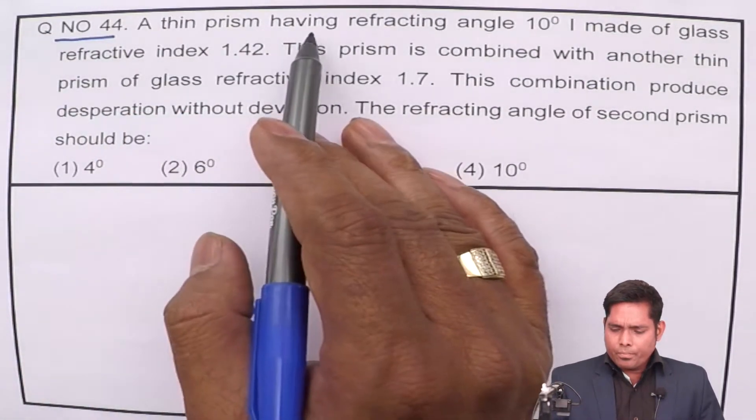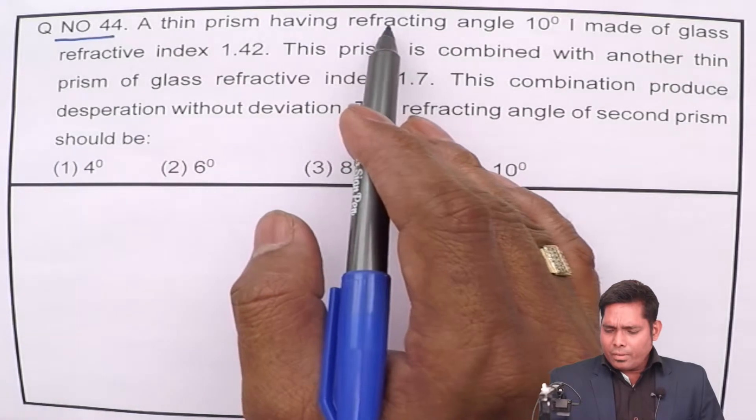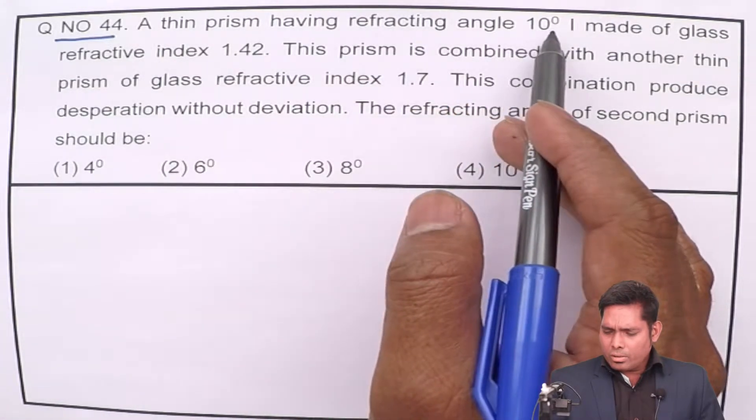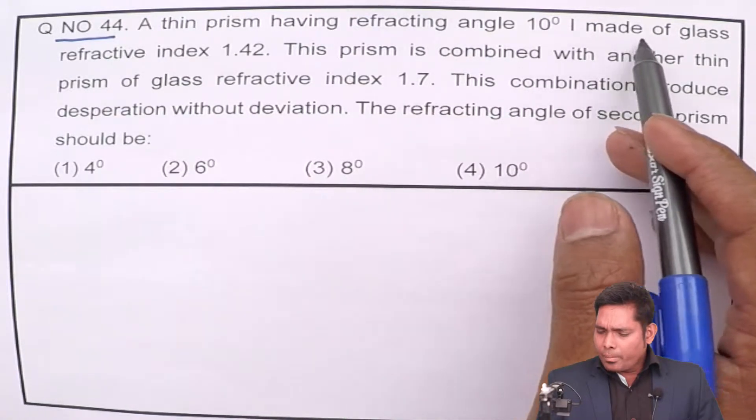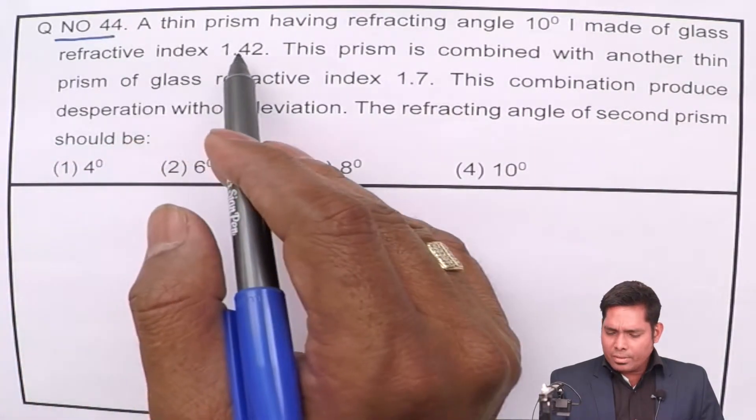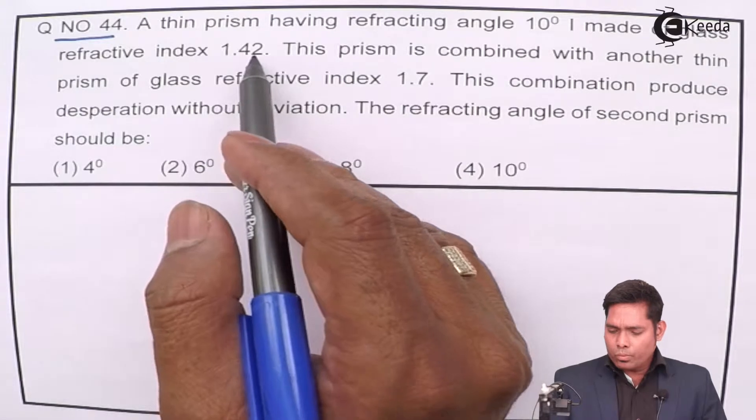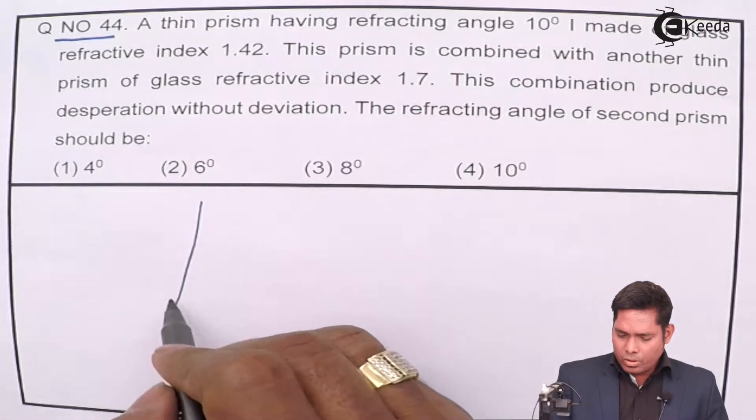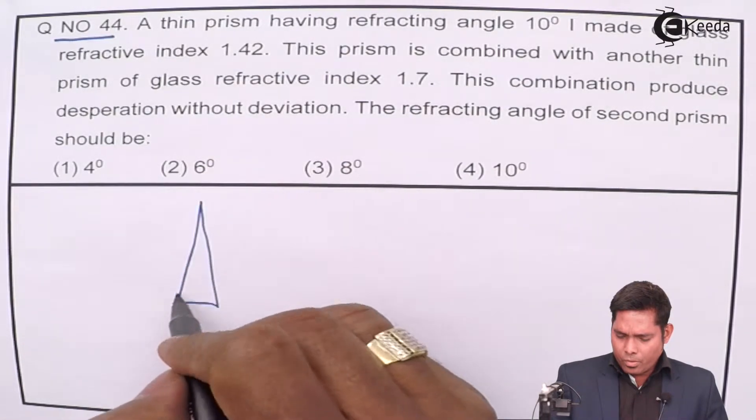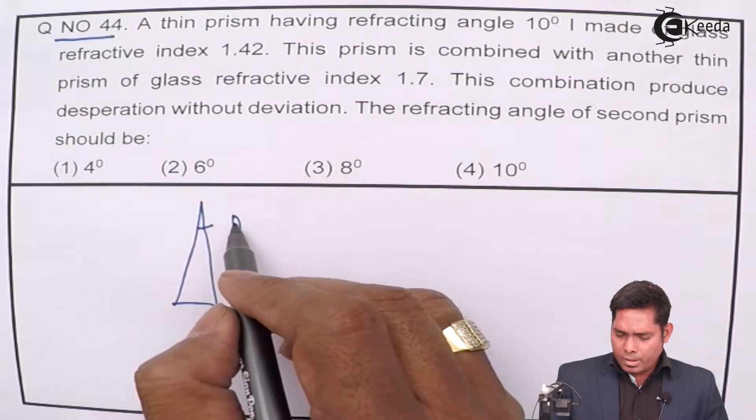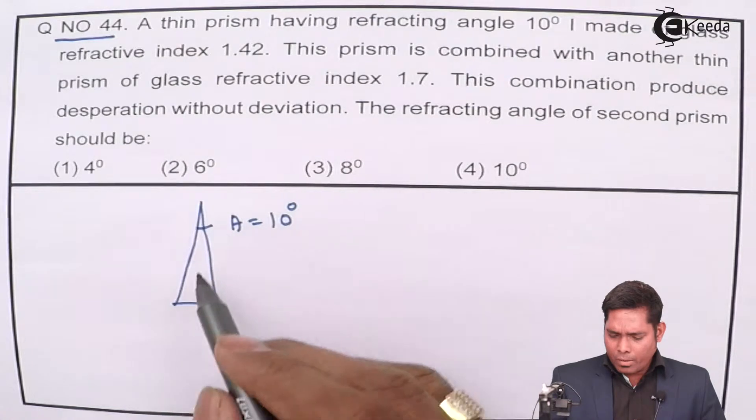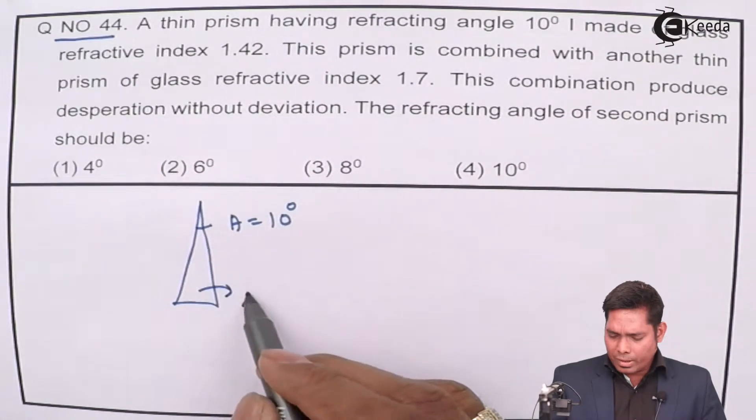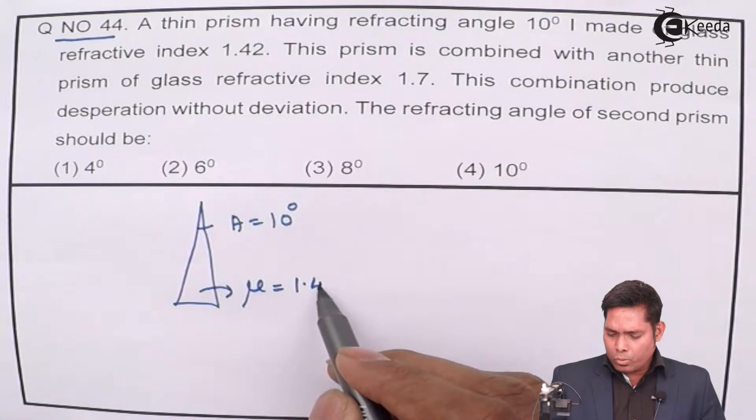A thin prism having refracting angle 10 degrees is made of glass of refractive index 1.42. This angle of prism is 10 degrees and it is made of glass of refractive index 1.42.